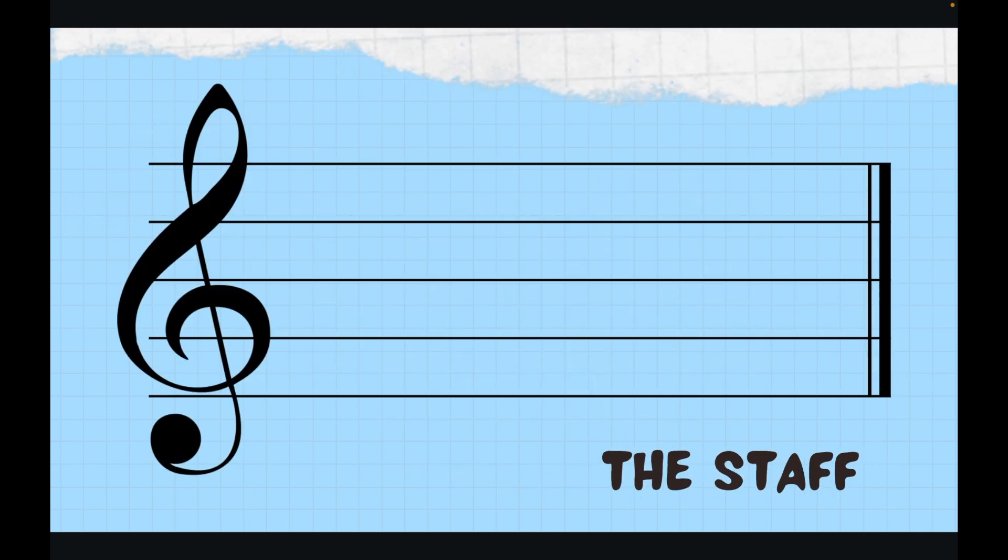First things first, we're going to take a look at this thing called the staff. On the staff we have lines and spaces, but the very first thing we have is our clef. The thing on the very far left side is called the clef, specifically in this case the treble clef.